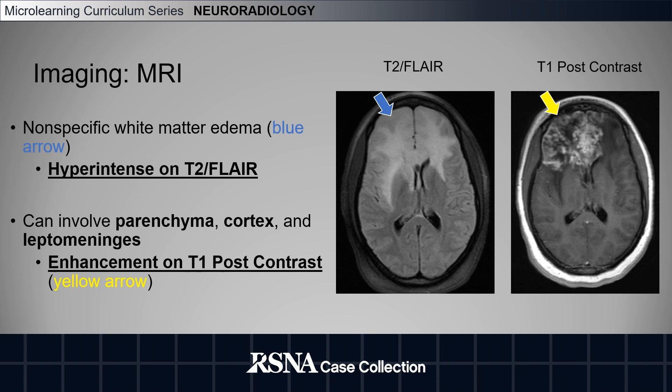MRI findings of intracranial sarcoidosis include nonspecific white matter edema, demonstrated on the left as hyperintense signal on T2 FLAIR sequences. On the right, on the post-contrast sequence, we can see enhancement primarily involving the parenchyma, but there may also be cortex and leptomeningeal enhancement.